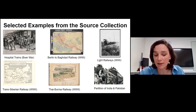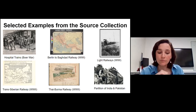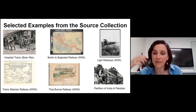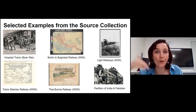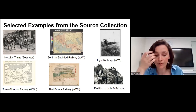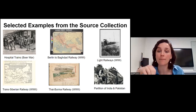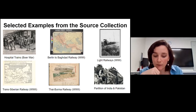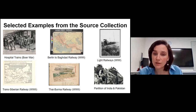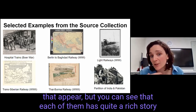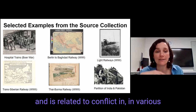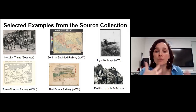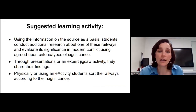Sixth, the partition of India and Pakistan in 1947: trains were crucial for transporting refugees across the border in both directions, and it was prioritized that rail services be maintained so refugees could be transported as quickly as possible. One photo shows a train transporting people from Punjab in India across the border into Pakistan. Each of these sources has a rich story related to conflict in various ways.